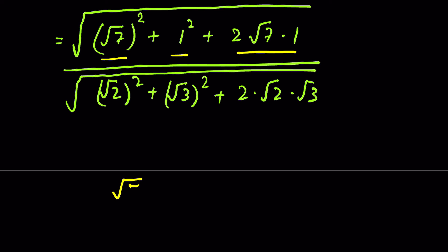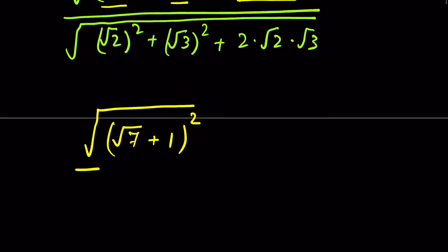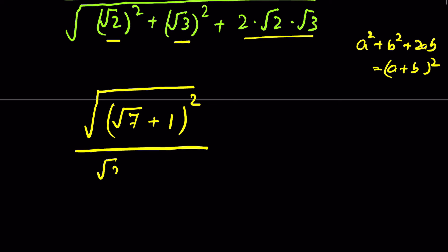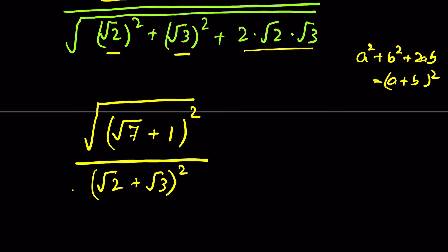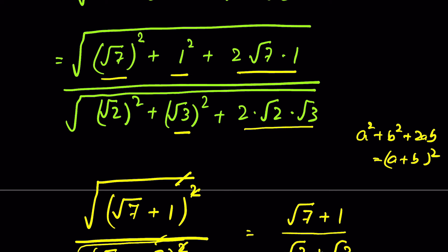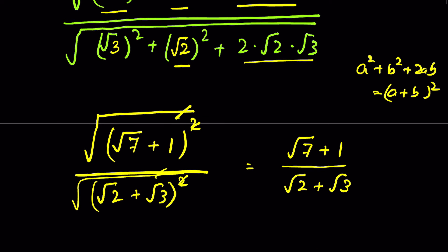This is in the form of a squared plus b squared plus 2ab, equal to (a plus b) whole square. So the numerator becomes square root of (square root of 7 plus 1) whole square, and the denominator becomes square root of (square root of 2 plus square root of 3) whole square. Removing the square root with the square gives us (square root of 7 plus 1) upon (square root of 2 plus square root of 3).